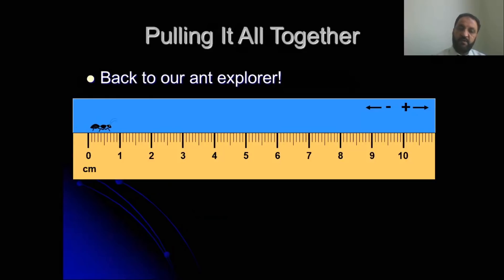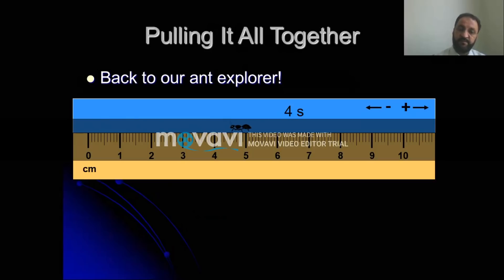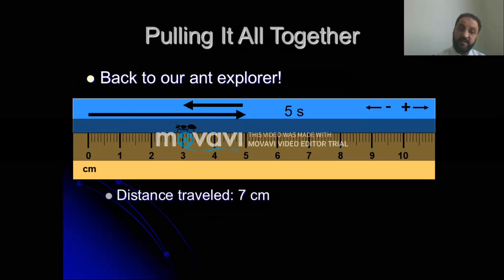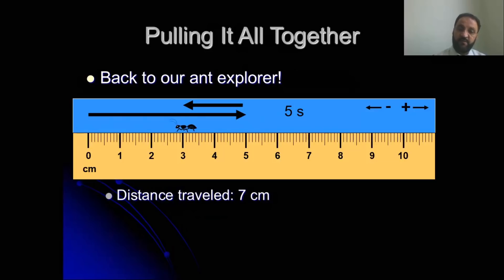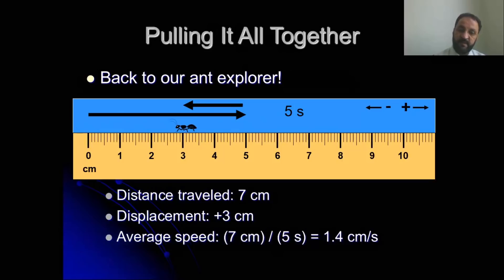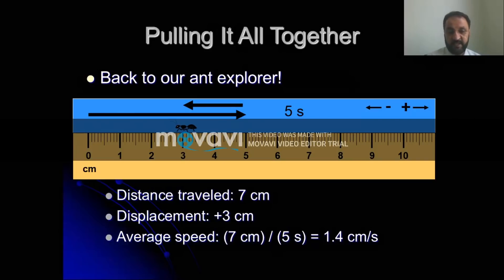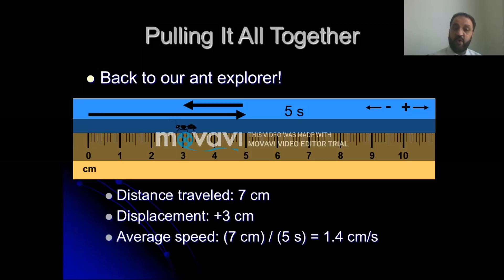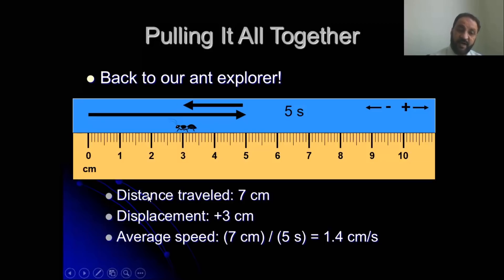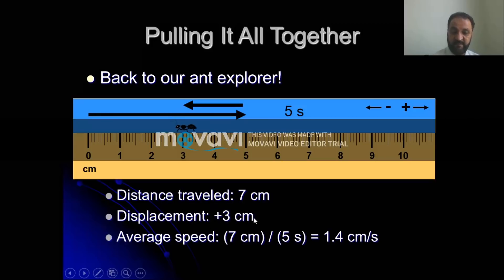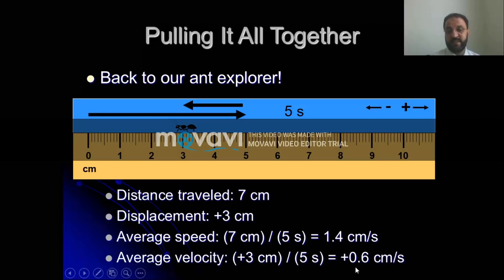See now: when an object is moving forward and backward, the time taken is five seconds and the total distance is seven. Speed equals distance divided by time: seven divided by five equals 1.4 centimeters per second. This is speed. But if we ask for velocity, velocity needs direction, so we use displacement rather than distance. The displacement is plus three, so velocity equals three divided by five, which is 0.6 centimeters per second.